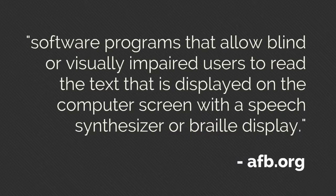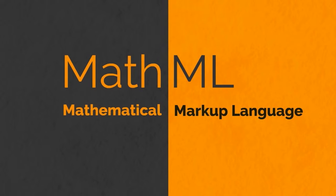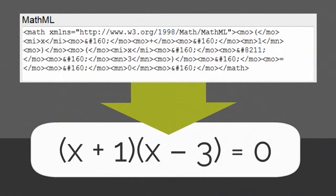The ideal method for making equations accessible is to use mathematical markup language, known as MathML, instead of image files. Browsers that support MathML are able to read and translate markup language into properly formatted equations.